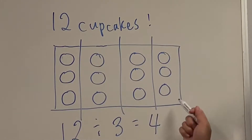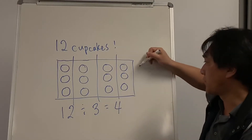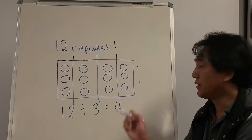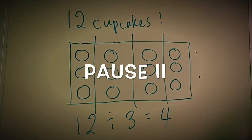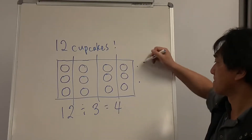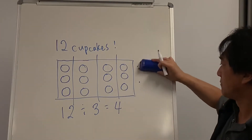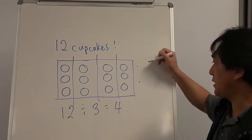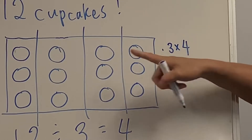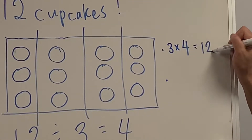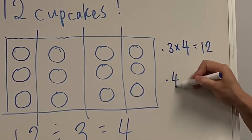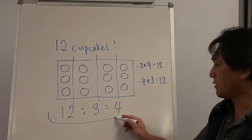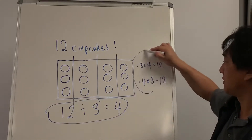Looking at this picture, can you think of two different multiplication number sentences? Let's write them down. So we can clearly see 3 rows of 4 dots, and I can see 4 columns of 3 dots — that's 12. Now can you see the connection between division and multiplication? There is a little connection there.